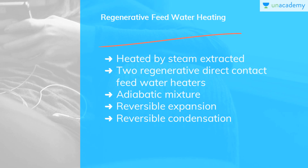Let's move on to regenerative feed water heating. The feed water enters the boiler at a temperature between stage 5 and 4S and is heated by steam extracted or bled from the intermediate stages of the turbine. The T-S and H-S diagrams with saturated steam at turbine inlet show two regenerative direct-contact feed water heaters. For 1 kg of steam at the turbine inlet, M1 kg of steam is extracted at pressure P2 to mix adiabatically in heater 1. The remaining steam expands reversibly to P3, when M2 kg steam is extracted to mix with (1 - M1 - M2) kg of feed water in heater 2. The remaining steam expands reversibly to the condenser pressure.